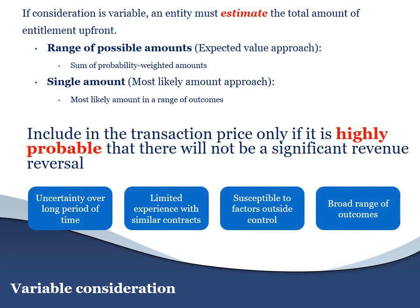What this gives rise to is variability in the transaction price. The guidance in step 3 of IFRS 15 states that if consideration is variable, an entity needs to estimate that variable component upfront. An entity cannot wait until month 23 to see whether an adjustment is needed to revenue recognized. There are two ways to estimate the variable component: either consider the range of possible outcomes using a probability-weighted expected value approach, or determine the most likely amount. The variable component is only included in the transaction price if it is highly probable there will not be a significant revenue reversal at a later point in time.